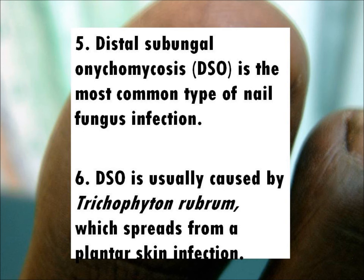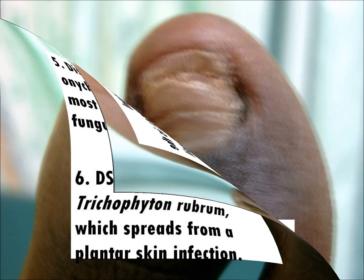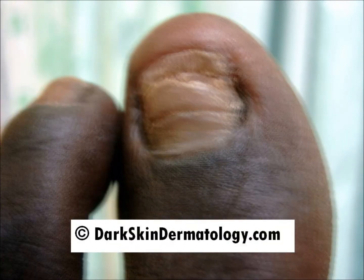Fact 5: Distal subungual onychomycosis, or DSO, is the most common type of nail fungus infection. Fact 6: DSO is usually caused by Trichophyton rubrum, which spreads from a plantar skin infection.